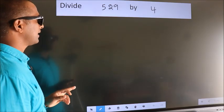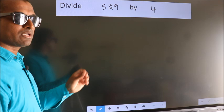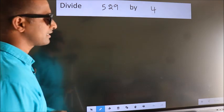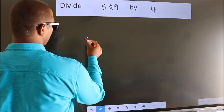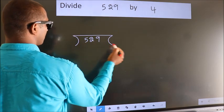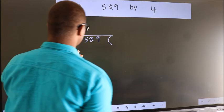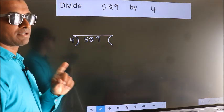Divide 529 by 4. To do this division, we should frame it in this way: 529 here, 4 here. This is your step 1.